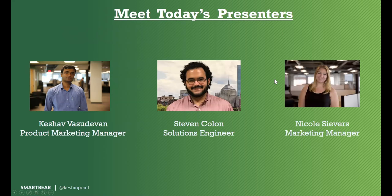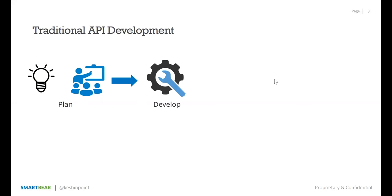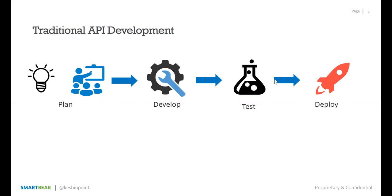I want to kick things off by talking about how APIs have been developed historically. APIs have been around for a long time, even before the advent of the PC, and they've always been confined to the back end of applications. Traditionally, when you build an API, you have an idea — maybe to speed up a process internally, connect two applications, or deliver features faster — so you'd quickly build it out, make sure it works, and deploy it.